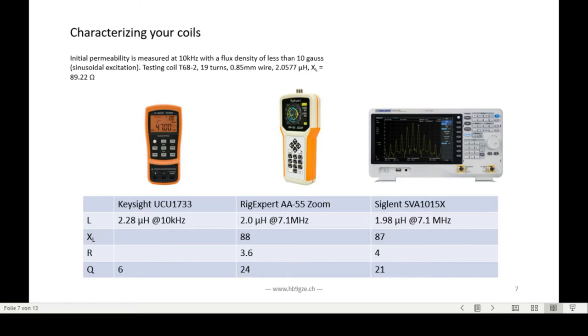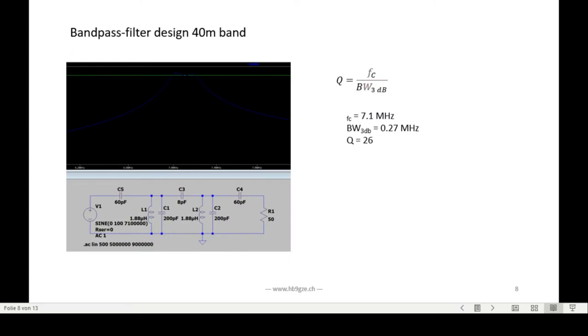If I use a spectrum vector network analyzer, I get also 2 microhenry and 21 Q. So that's what my filter really sees. I can calculate with 2 microhenrys. However, I did choose now 19 turns, 0.85 wire. I took a thicker wire to reduce any losses.